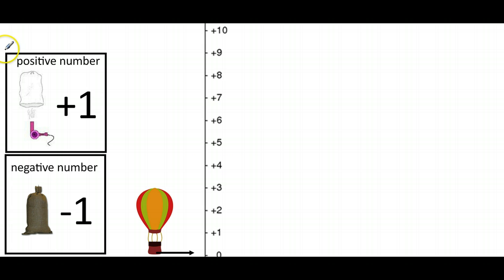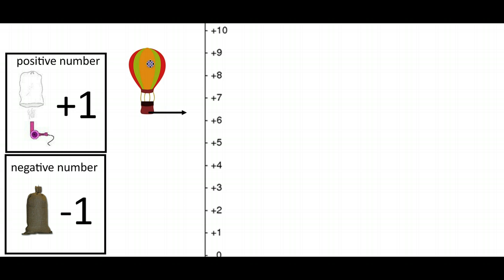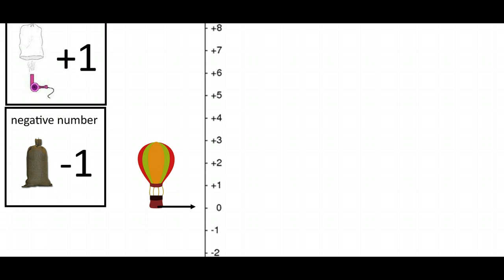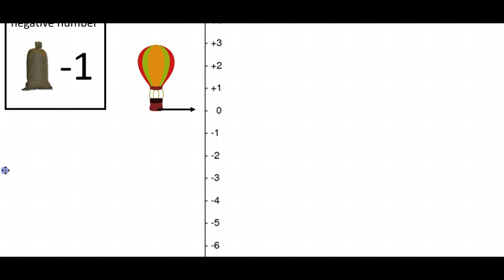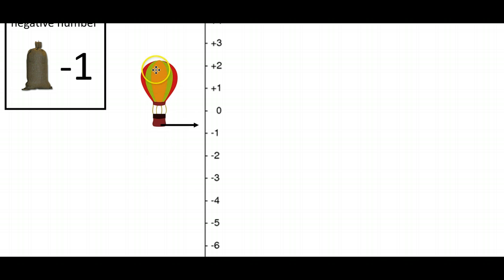One way to think of negative numbers is through this hot air balloon idea. We have a hot air balloon that counts up numbers as it rises, and potentially goes into the negatives if it sinks — if we don't assume zero is ground level, it's just the height at which it starts.